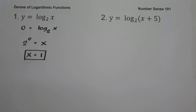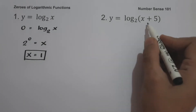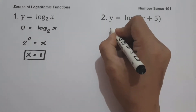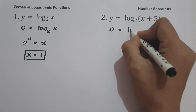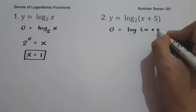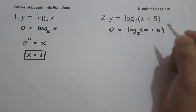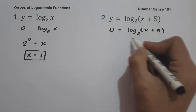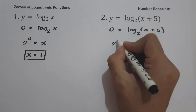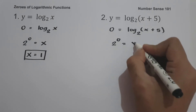On example number two: y equals log base 2 of (x + 5). To find the zero of the given function, let us equate the function equal to zero. So we have zero equals log base 2 of (x + 5), and let us convert this into exponential form: 2 raised to 0 equals x + 5.